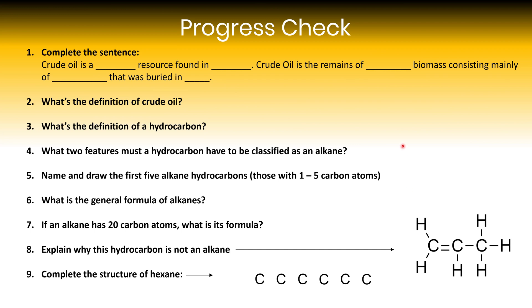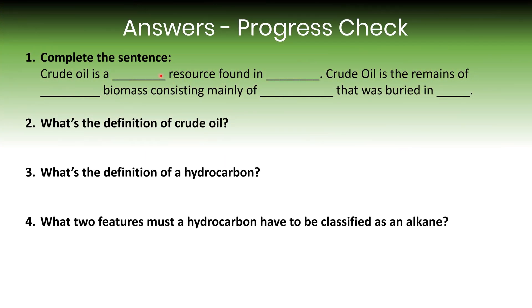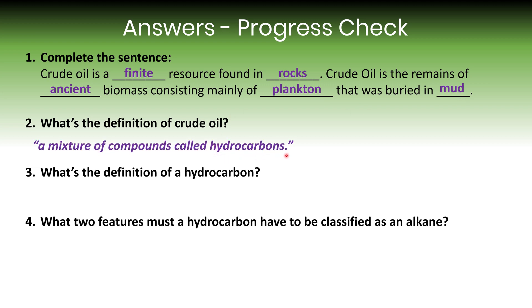Now I want you to do a progress check. Have a go at these questions, pause the video, then come back and see how you did. Let's now have a look at the answers. In the first question we're asked to complete the sentence — this is a description of crude oil, but remember its definition. Crude oil is a finite resource, meaning it's going to run out, found in rocks, and it's the remains of ancient biomass consisting mainly of plankton that was buried in mud. The definition of crude oil is a mixture of compounds called hydrocarbons.